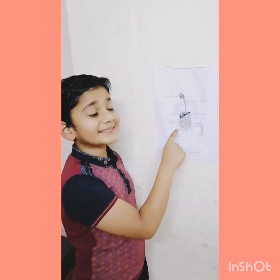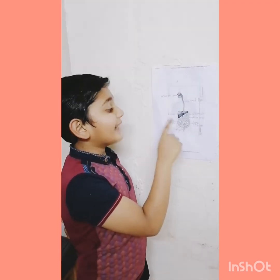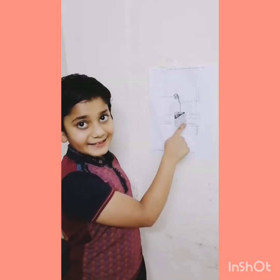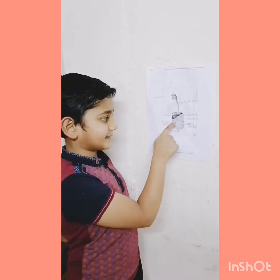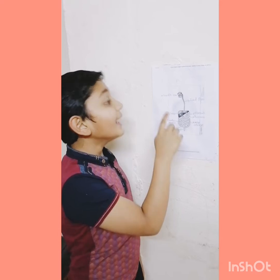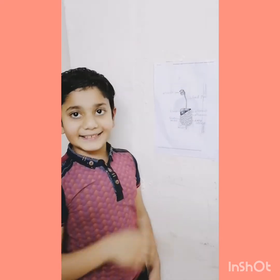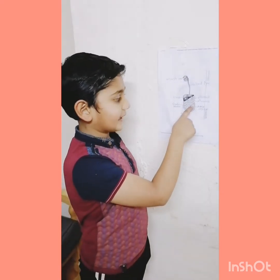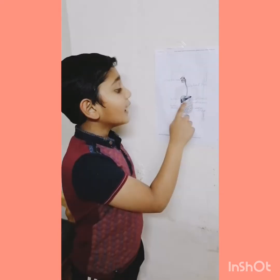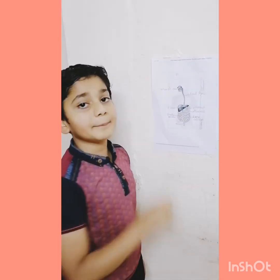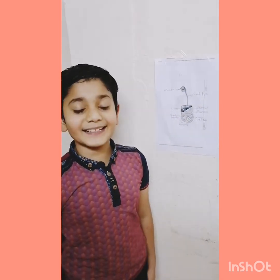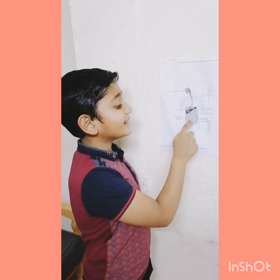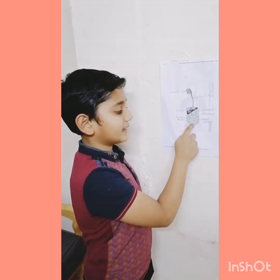In the small intestine, digestive juices from the liver and pancreas mix. The digestion is completed in the small intestine. The simple useful substances present in the food are taken into the blood in the small intestine.